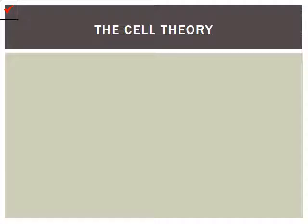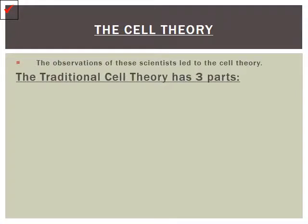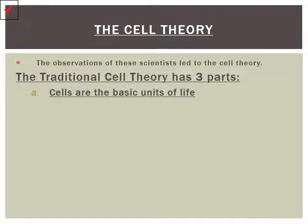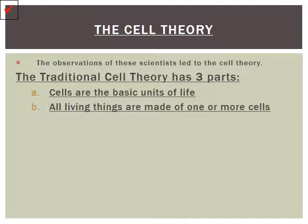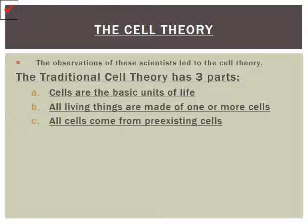The combination of all these findings led to the creation of what we call the cell theory. The traditional cell theory has three components: cells are the basic unit of life; all living things are made of one or more cells; and all cells come from pre-existing cells.